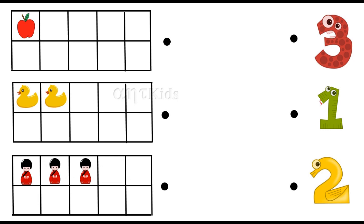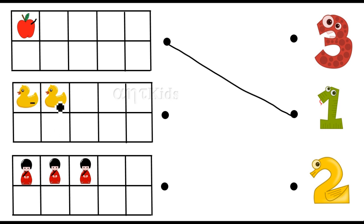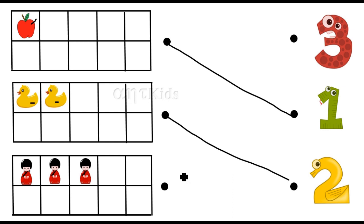How many apples in this tens frame? One — one apple. How many ducks here? One, two — two ducks are in this tens frame. How many dolls here? One, two, three — three dolls in this tens frame.